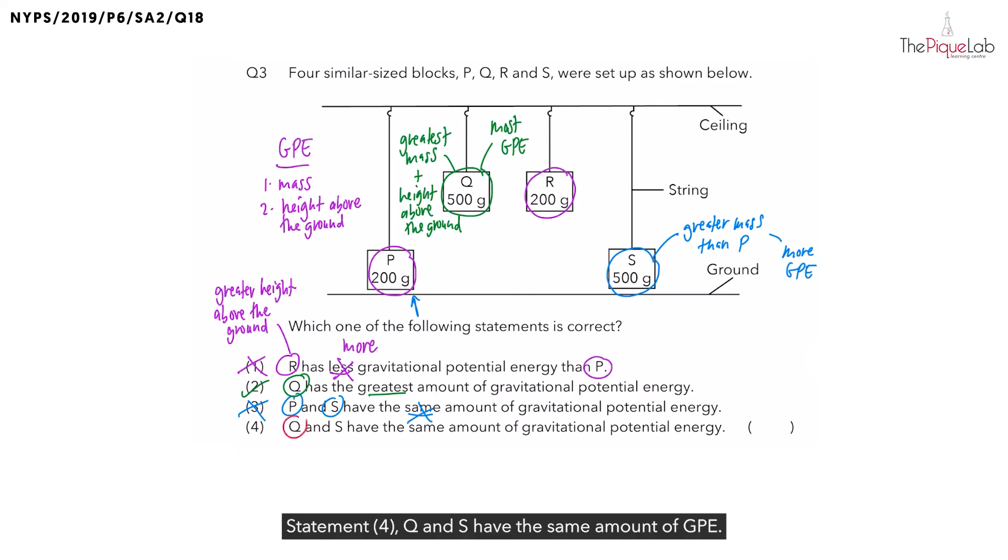Statement 4: Q and S have the same amount of GPE. We have already established in statement 2 that Q has the most GPE. I'm going to write that down. So can Q and S have the same amount of GPE? No, that's not possible. So statement 4 is also out. And this confirms our answer as statement 2.